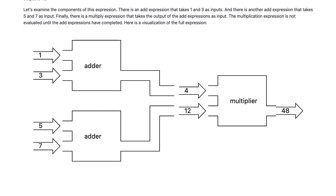Imagine that the inputs on the left side of the diagram are poured into the adders. The output then flows out of the adders and into the multiplier. Finally, the output from the multiplier flows out to the right.